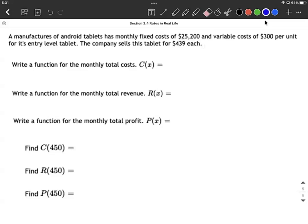a revenue function, a profit function, and then use those to find the cost of selling 450 of these, the revenue from 450 and the profit from 450. So let's get started.